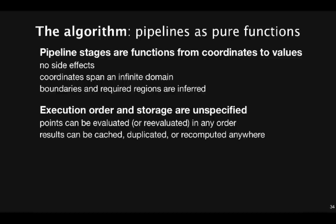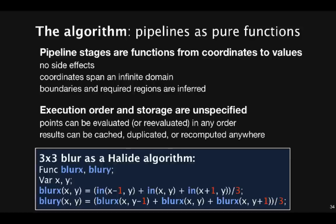For the 3x3 blur, the resulting code looks like this. The first stage, blur x, is defined at any point x,y as the average of 3 points in the input. Then blur y, at any point x,y, is the average of 3 points in blur x.